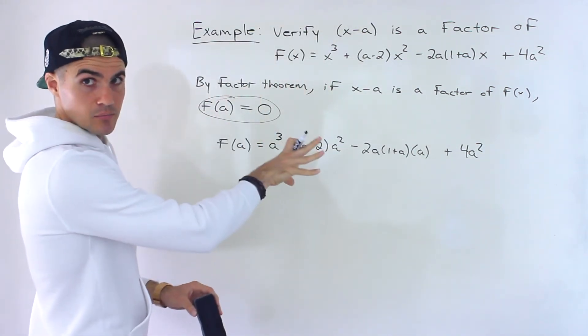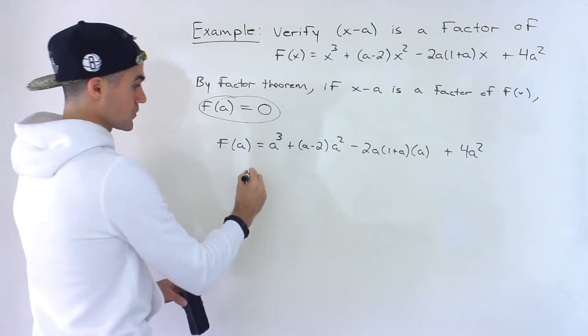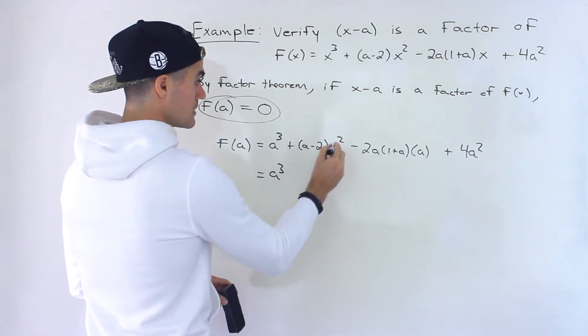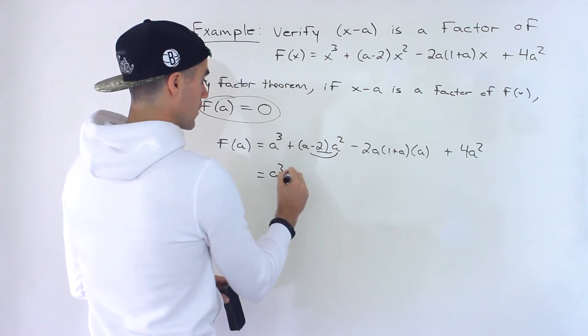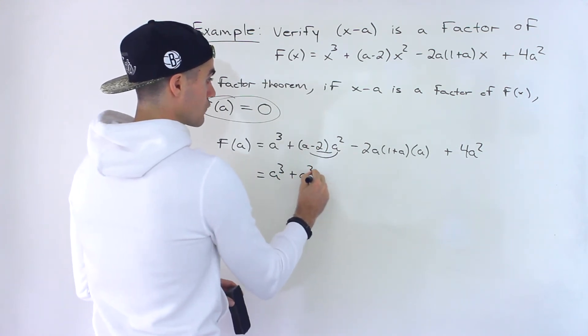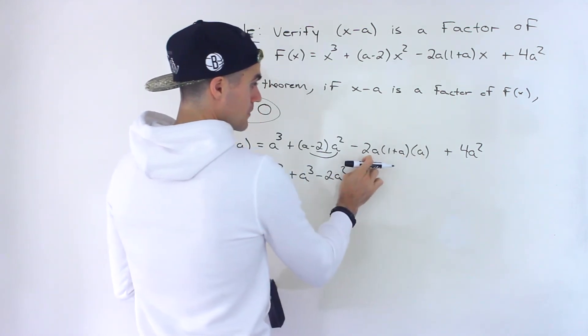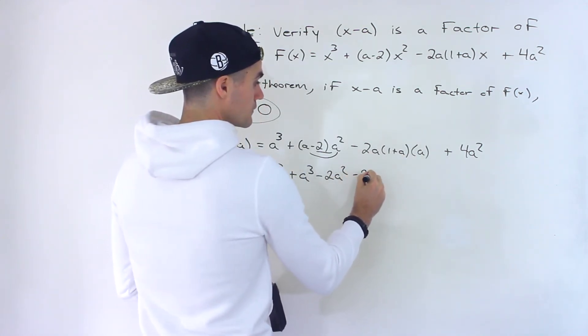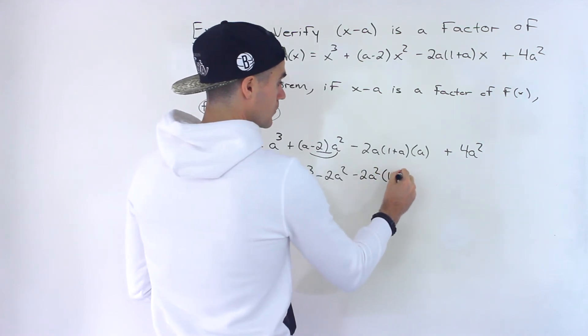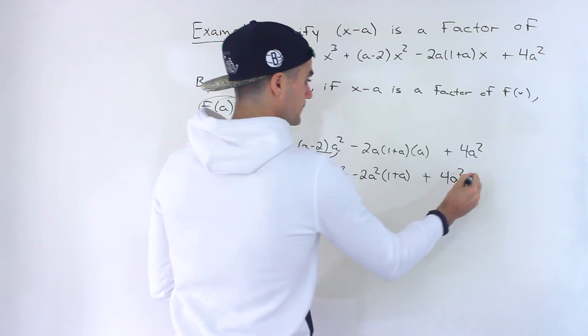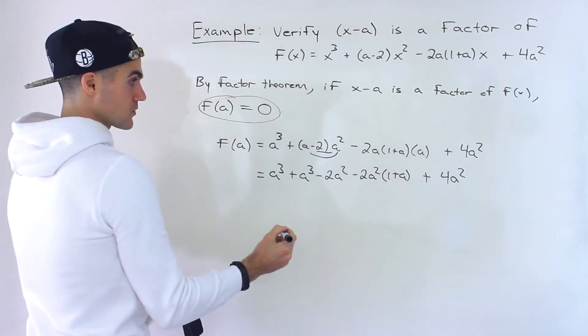And now at this point, we just have to simplify this and see what happens. What does it simplify to? So we would have a to the power of three, this a squared we could distribute in the bracket. So we'd have a to the power of three minus two a squared. This over here, I'm going to take this a and multiply it by the negative two a, so I'll have negative two a squared, and then we'll have one plus a. We're going to eventually distribute into that bracket. And then we have the plus four a squared at the end.